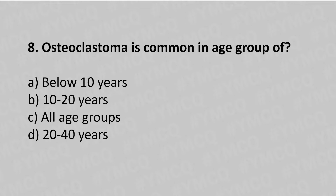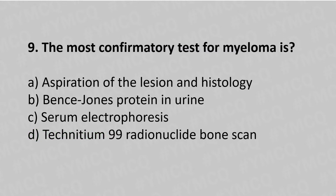Now let's move to question number 8. Osteoclastoma is common in the age group of — option A: below 10 years, option B: 10 to 20 years, option C: all age groups, option D: 20 to 40 years. The answer is option D: 20 to 40 years.